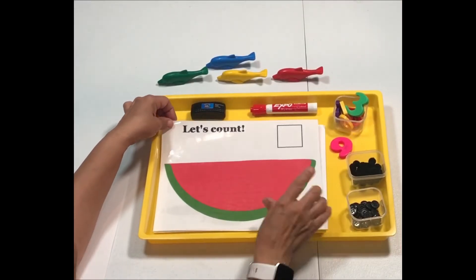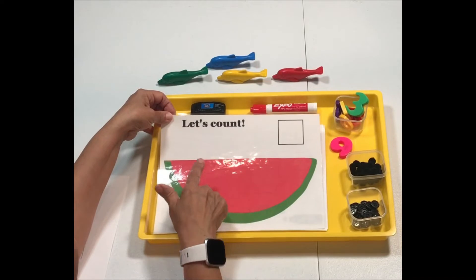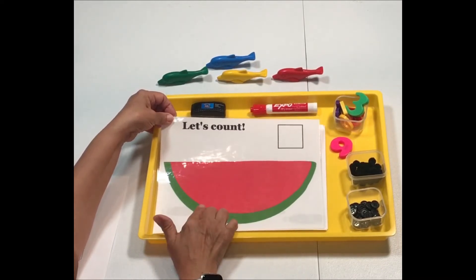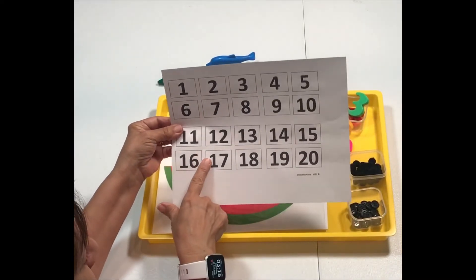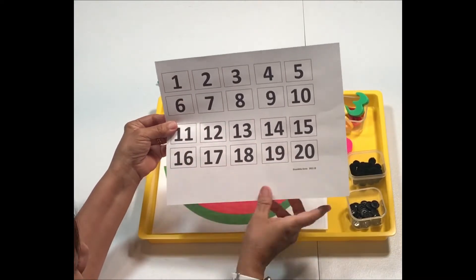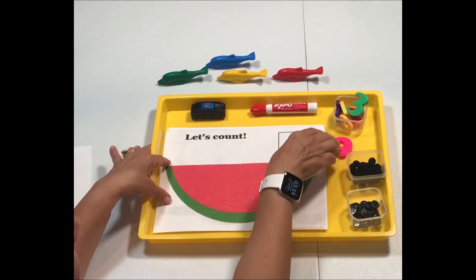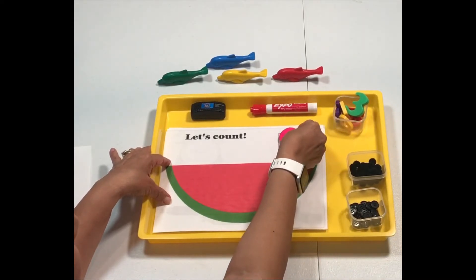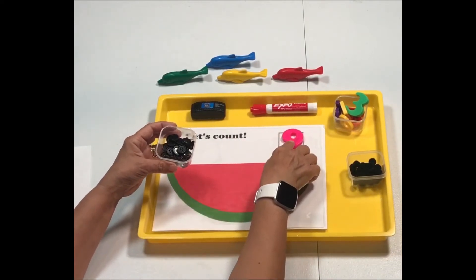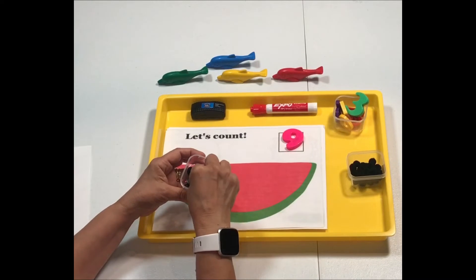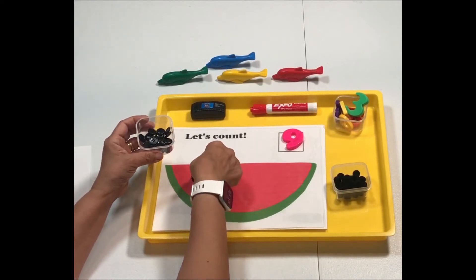This next activity, I put together this printable. I'm calling it Let's Count. I have a watermelon slice with a little square up here. You can use these numbers, I have one through 20. I'll go ahead and link this below. What we're going to do is we're going to count. I'm going to use these magnetic numbers. So we would put a number there and we're going to count nine seeds. You can use buttons or pom-poms or black beans, whatever you have at home.